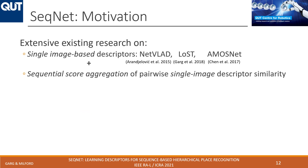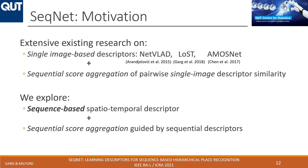Most past research has mainly focused on aggregating scores over a distance matrix constructed by single-image-based descriptor similarity. This research focuses on sequence-based spatiotemporal descriptors learned end-to-end using contrastive learning, and that guides the sequential score aggregation, giving us a hierarchical place recognition approach.